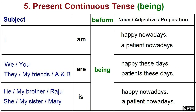In present continuous tense, we use being. Examples: I am being happy nowadays. We are being happy nowadays. He is being happy nowadays.